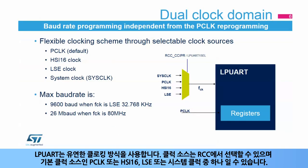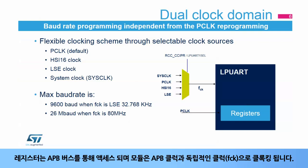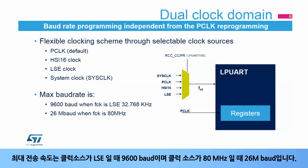The LPUART has a flexible clocking scheme. Its clock source can be selected in the RCC and can be either the PCLK, which is the default clock source, or the HSI-16, LSE, or system clock. The registers are accessed through the APB bus, and the module is clocked with FCK, which is independent from the APB clock. The maximum baud rate is 9,600 baud when the clock source is LSE, and 26 megabaud when the clock source is at 80 MHz.